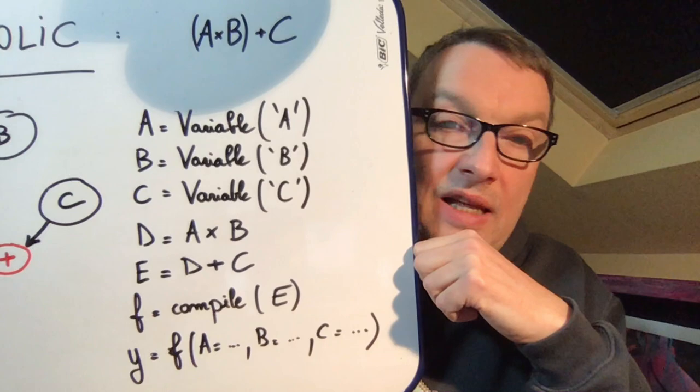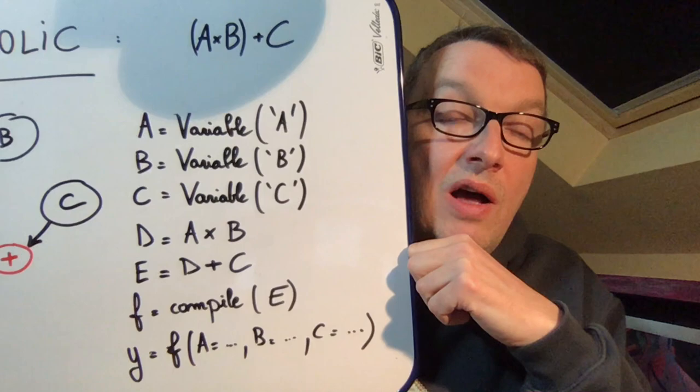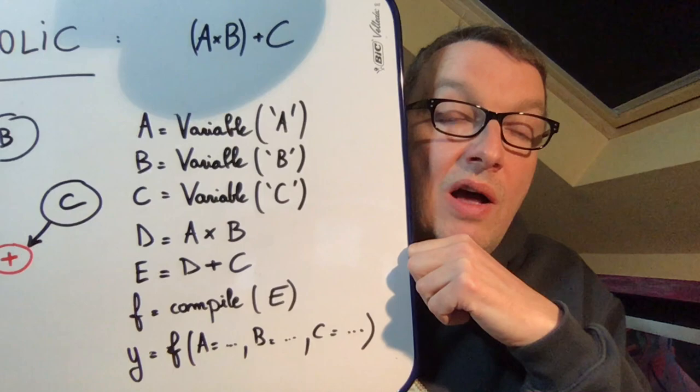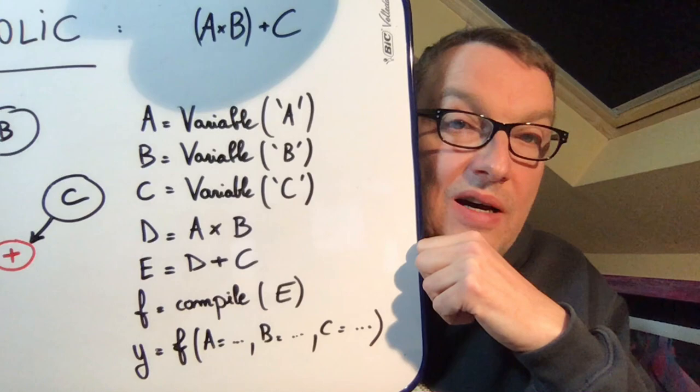Then we would define a new variable D which would be the multiplication of A and B. Again, at this point, this is just definition—symbolic programming. No actual processing is performed. Then E would be D plus C. That would build the execution graph you see over there.